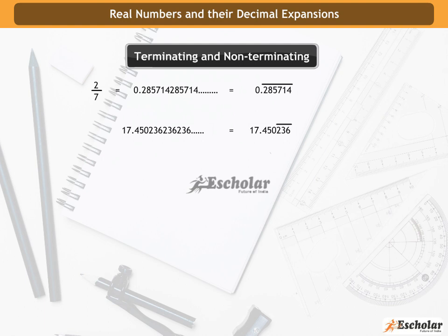Now consider the irrational number pi. The approximate value of pi is 22 by 7. The decimal expansion of pi is 3.14159265358 and so on, which is non-terminating and non-repeating.